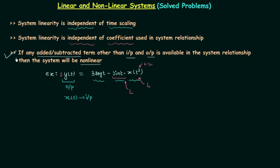According to the third property, if any added or subtracted term other than the input and output is available in the system relationship, then the system will be non-linear. In this case we have the added term 3log(t). It is time dependent, but there is no effect of time dependency here. We have the input term and the output term, but 3log(t) does not belong to input or output — therefore it is our added term and this makes the system non-linear. The overall linearity will not depend on the linear results from time scaling and coefficients, since we have non-linear due to this added term. So the system is non-linear.